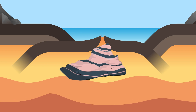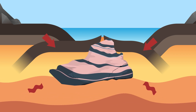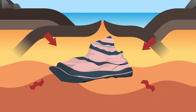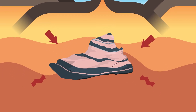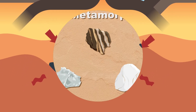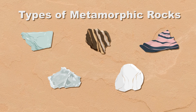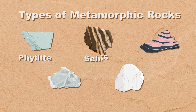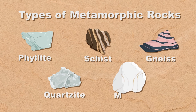Extreme heat and pressure can change a rock's face. Deep in the earth, where these changes can take place. Common types of metamorphic rocks include phyllite, schist, gneiss, quartzite, and marble.